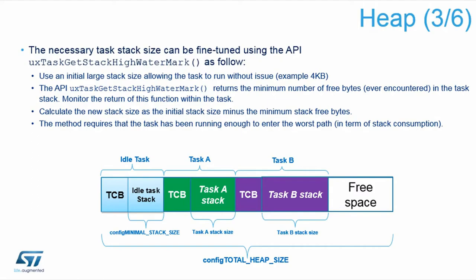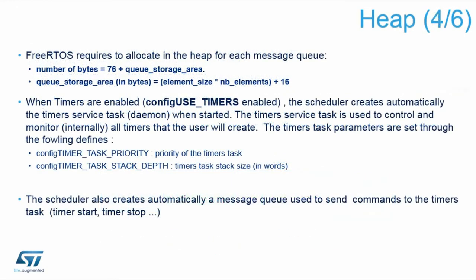So if you take from the TCB the length of the stack and the watermark, you can subtract them and automatically know how much space wasn't used — so the stack can be reduced by this amount to spare some memory. When you define the heap you must define its size so that all objects fit inside, but the whole heap must fit in your memory too. When other objects like message queues are created, they take a number of elements multiplied by element size plus some default overhead like 16 bytes for the queue description. Additionally, when using software timers, a timer task is created during kernel initialization that is responsible for processing timing events.